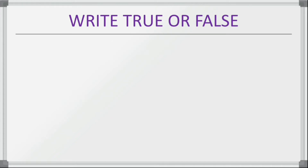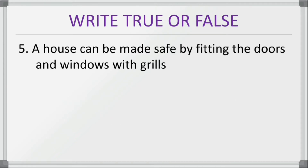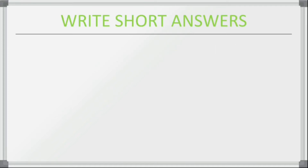Fifth true or false: a house can be made safe by fitting the doors and windows with grills — is it true? It is true. So houses can be made safe by fitting the doors and windows with grills.